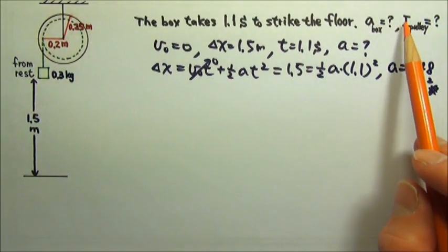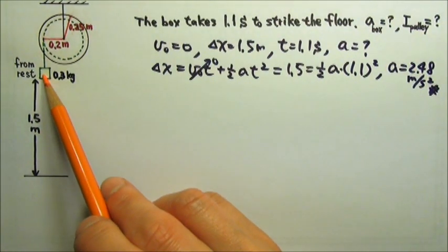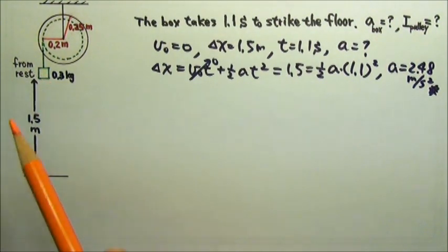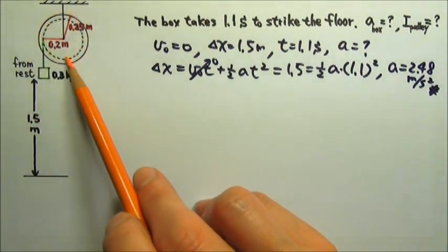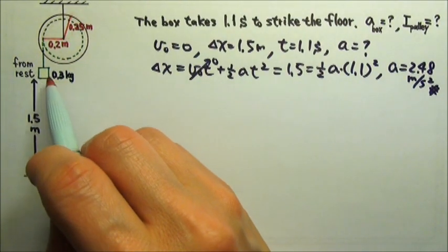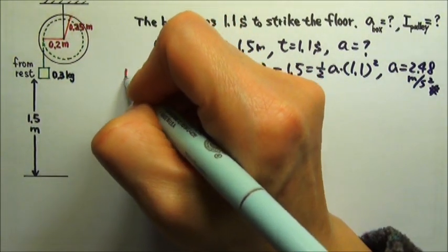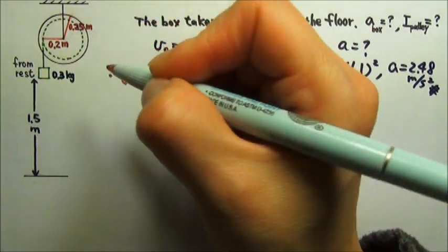To find the rotational inertia, we'll have to write force equations for the object that does the rotational motion. The box does translational motion, and its acceleration goes downward.